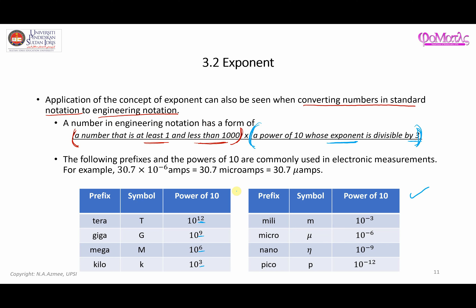This table gives examples of prefixes and the powers of 10 commonly used in electronic measurements. For example, 30.7 times 10 to the power of negative 6 — the first component, 30.7, is at least one and less than one thousand, and the exponent negative 6 is divisible by 3. So this number is written in engineering notation.